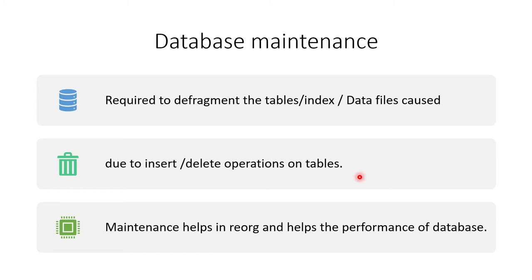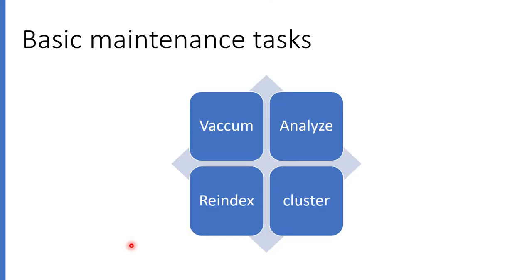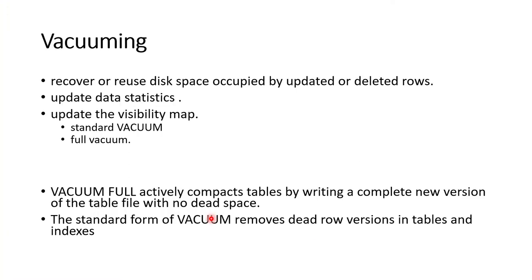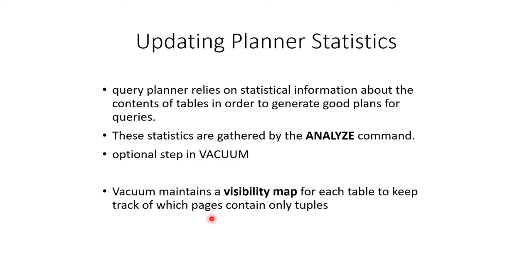When we do maintenance, it helps in reorganizing the tables and indexes to enhance the performance of the database. We'll be talking about four maintenance processes: first is vacuum, where dead tuples are removed from the table — with standard vacuuming, those dead tuples become available as free rows and storage for later use. Second is analyze. Third is reindexing, which creates a new index without any fragmentation. And the last is clustering of the tables.